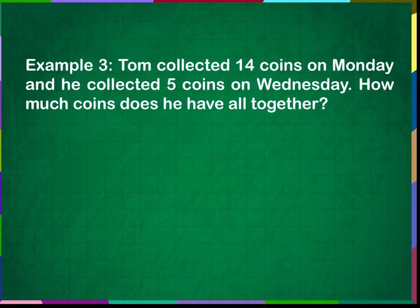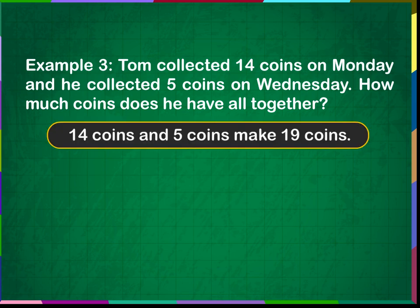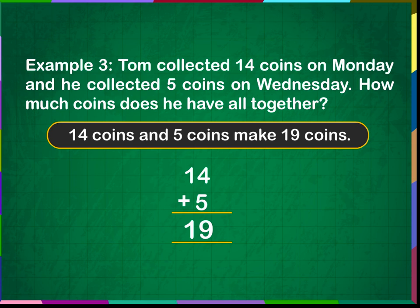Example 3: Tom collected 14 coins on Monday and 5 coins on Wednesday. How many coins does he have altogether? 14 coins and 5 coins make 19 coins. 14 plus 5 is equal to 19. Tom has altogether 19 coins.